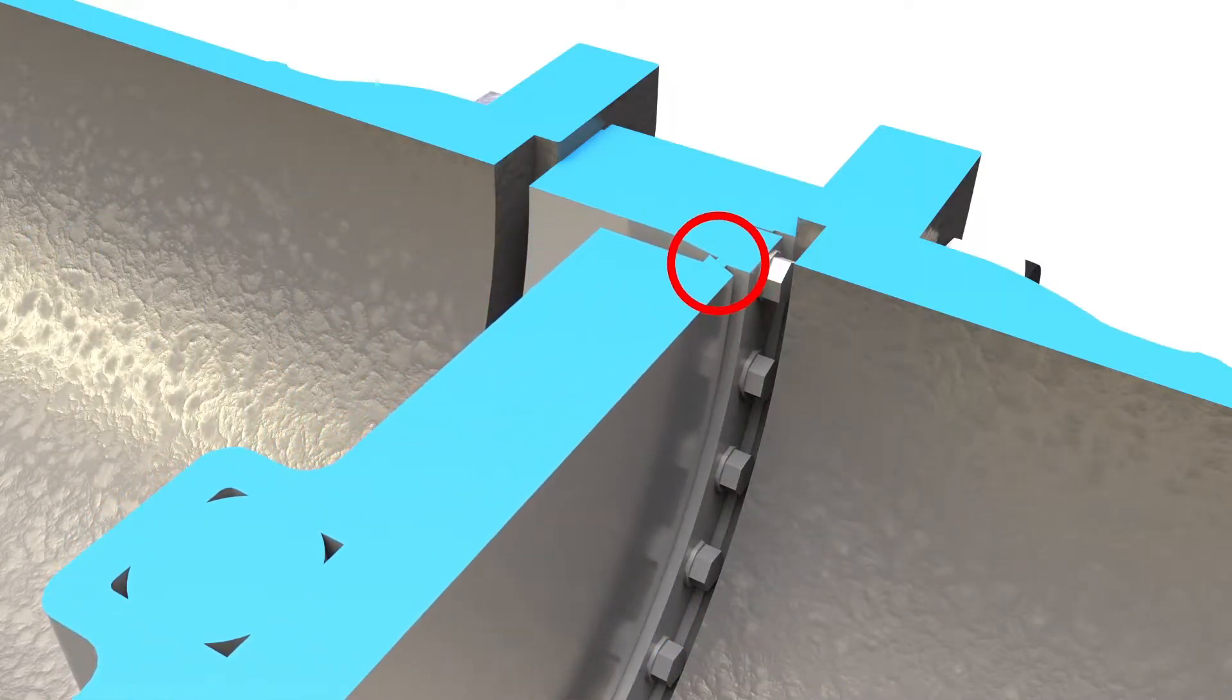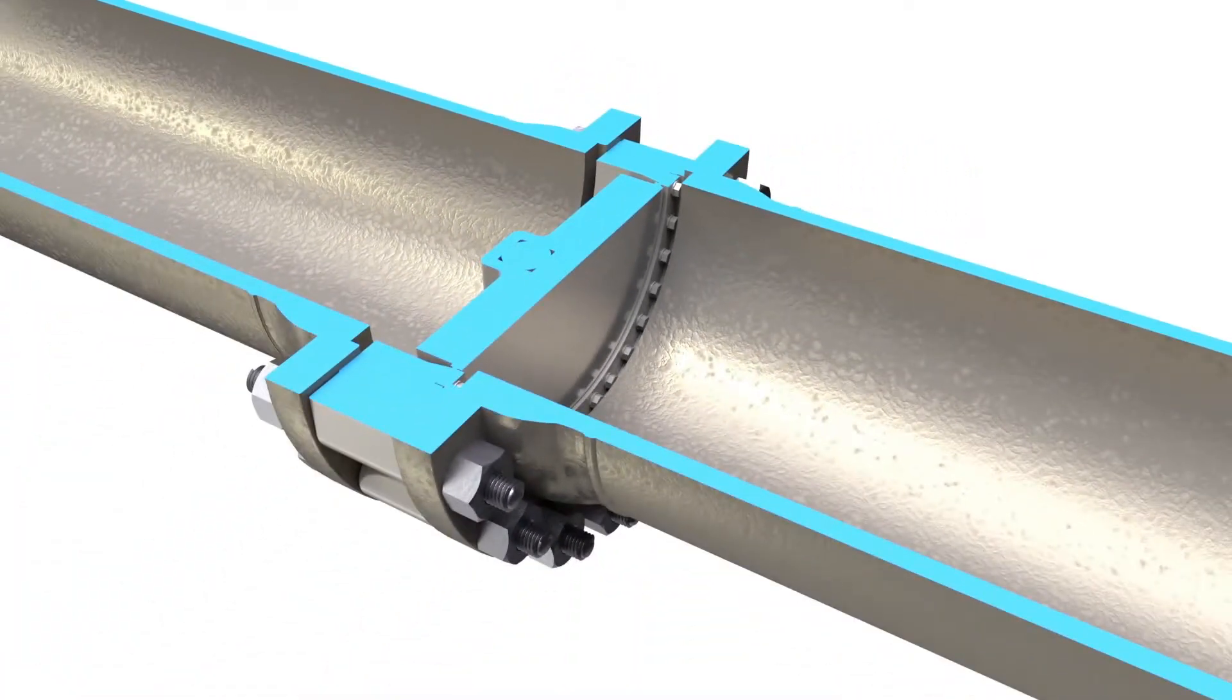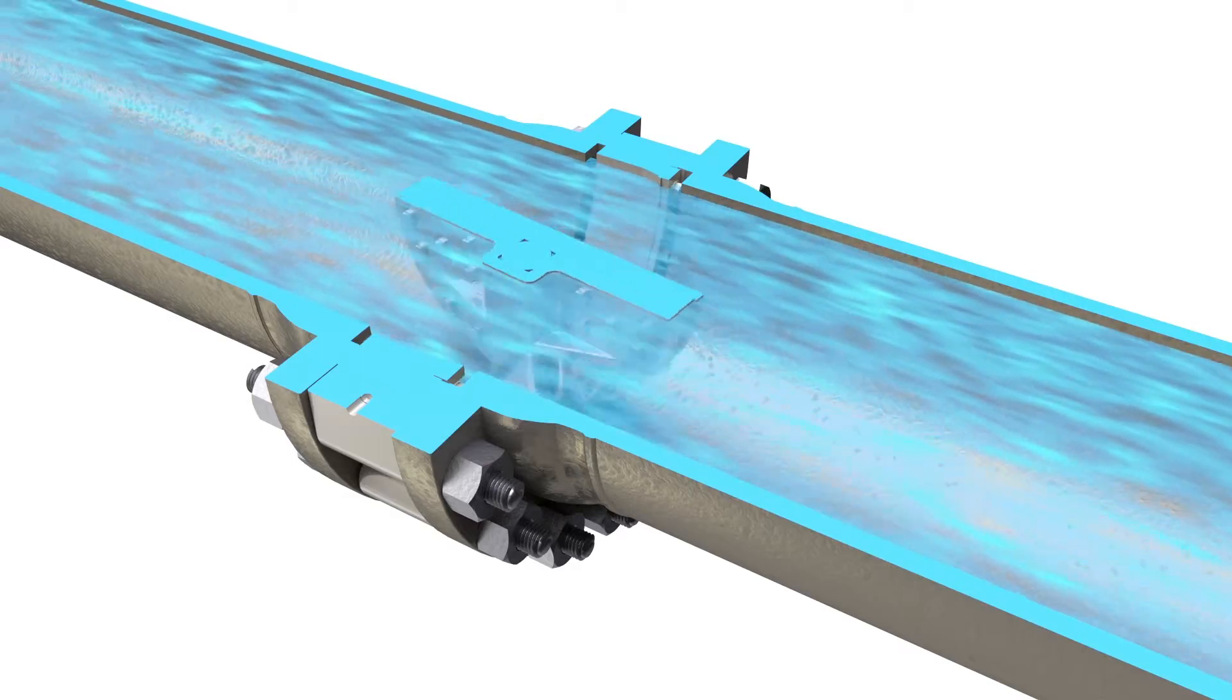This eliminates friction during throttling which increases efficiency and eliminates the need for elastomers, soft seats or liners.